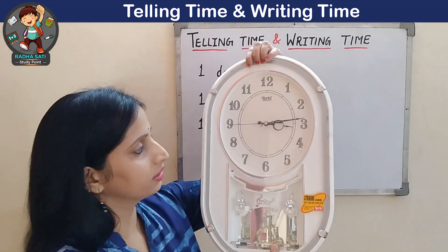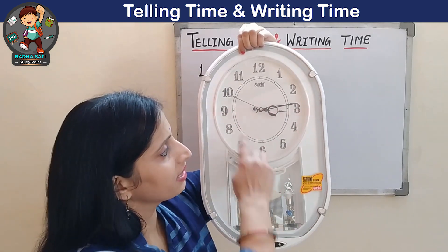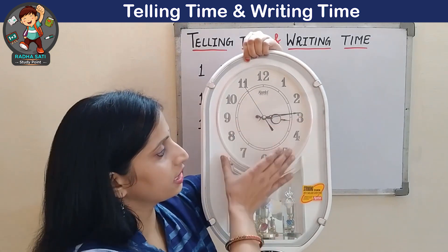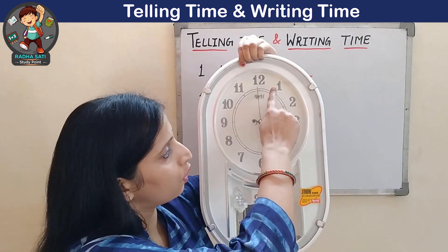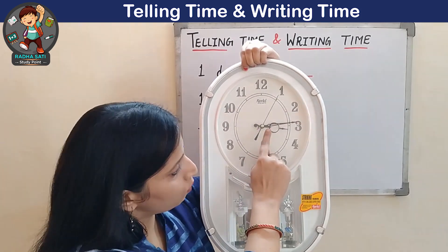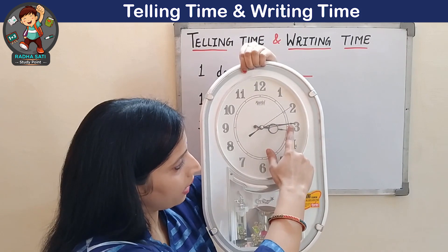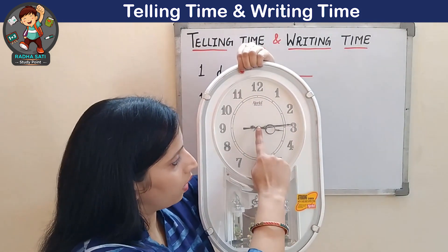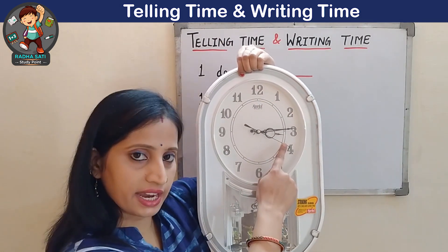So this is a clock — this is called an analog clock. An analog clock has hands which rotate all the time. This front part is called the face of the clock, and it has numbers from 1 to 12. There are 3 hands: this smaller one is called the hour hand, this long one is called the minute hand, and this thin and long hand is called the second hand.